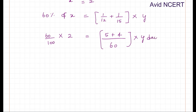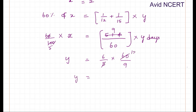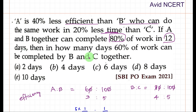Solving for y: y = (6/5) × (60/9). Simplifying, 6 and 60 give 5×12=60, and dividing by 9 gives 3×3=9, 3×4=12, 3×2=6, and 2×4=8. So y equals 8 days. Therefore, 60% of the work can be completed by B and C together in 8 days.